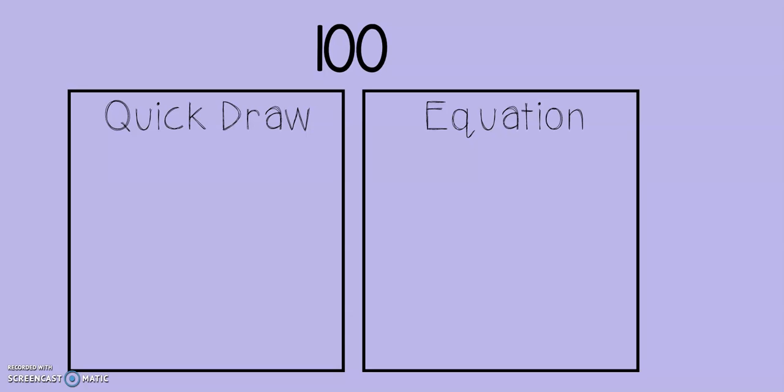Oh, this is a bigger number. We haven't done this one yet. 100. Our quick draw is going to be so easy for this one. 100. All done. That one box represents 100.